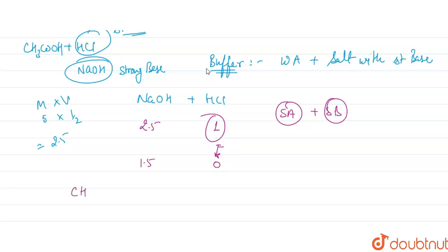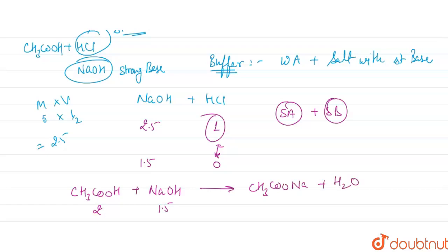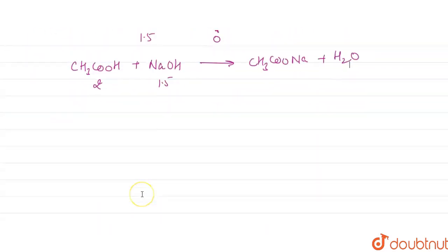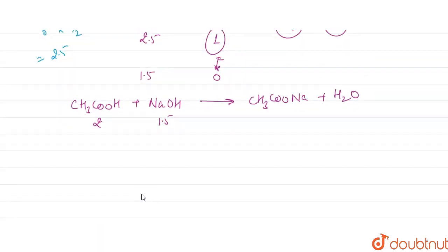The remaining NaOH (1.5 millimoles) now reacts with CH3COOH. CH3COOH + NaOH → CH3COO⁻Na⁺ + H2O. We have 2 millimoles of CH3COOH and 1.5 millimoles of NaOH. NaOH is the limiting reagent here, so it becomes 0. CH3COOH remaining = 2 − 1.5 = 0.5 millimoles, and salt (CH3COONa) formed = 1.5 millimoles.